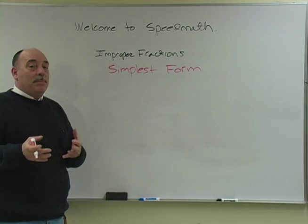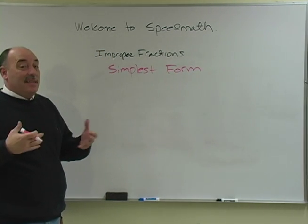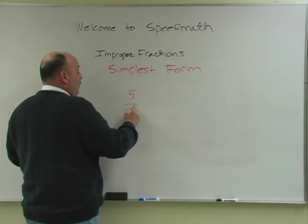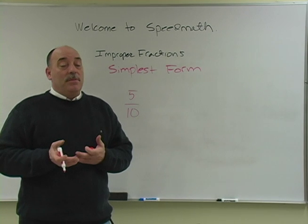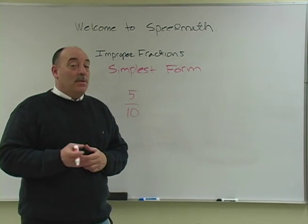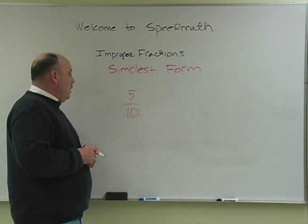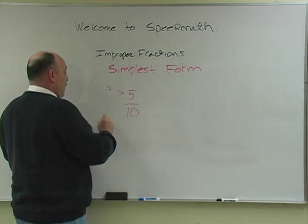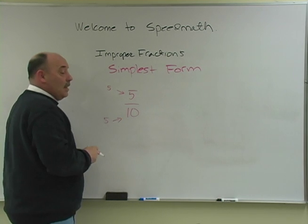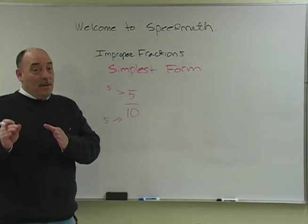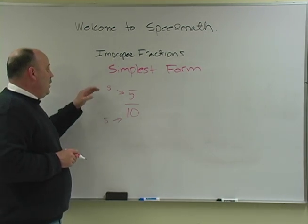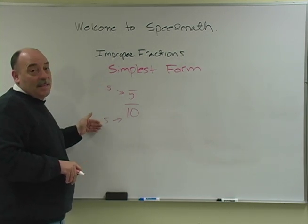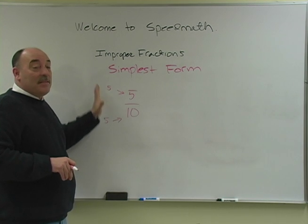Simplest form is not a difficult concept. Let's say I have a fraction of 5 over 10. You ask yourself what number goes into 5 that also goes into 10. I know that 5 goes into 5 and 5 goes into 10. Now, it's important to remember that the number has to be the same — this couldn't be 5 and this can't be 2. They both have to be the same.